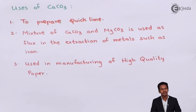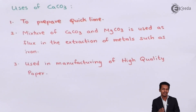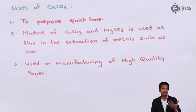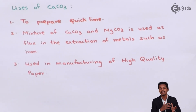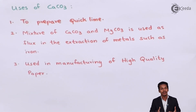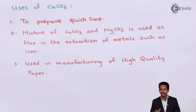Calcium carbonate is used in blast furnaces for iron extraction. It is also used in the manufacturing of high-quality paper — the fluffy powder form of calcium carbonate is used as a main ingredient because it forms a white layer and does not lose its color during paper preparation. These are the key uses of calcium carbonate.